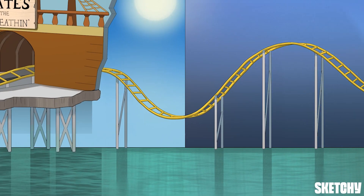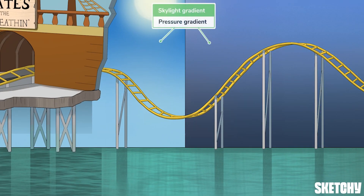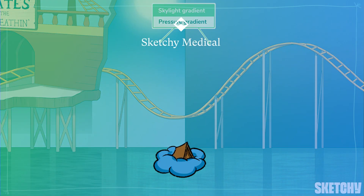Airflow in and out of the lungs is driven by differences in pressure. Let this gradient of light in the sky remind you that air will flow in the direction of high pressure to low pressure.